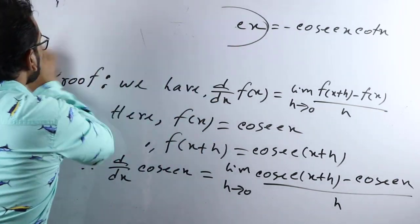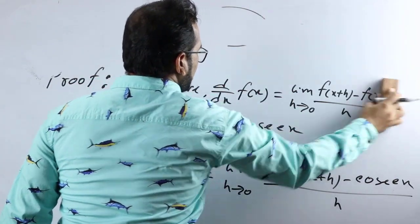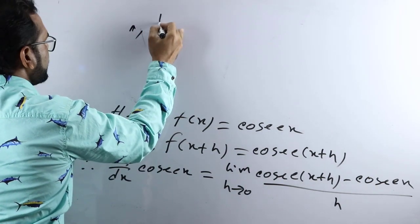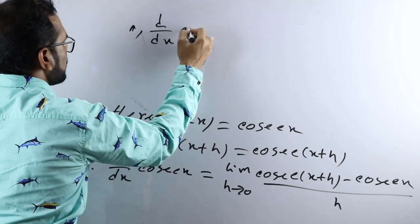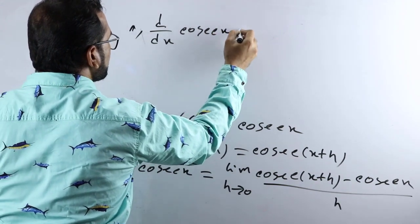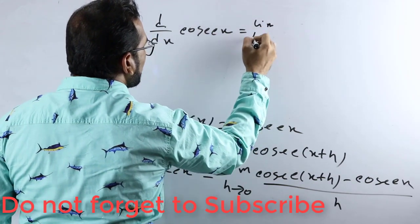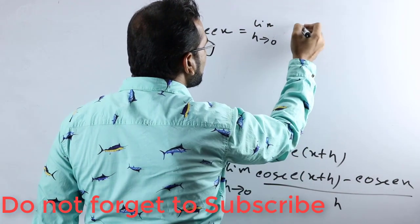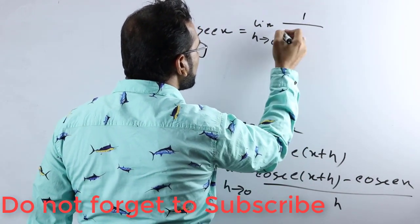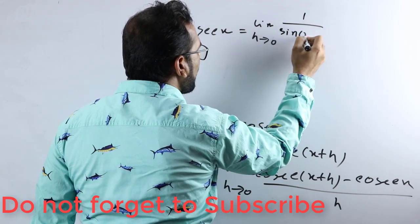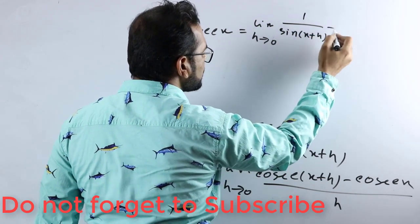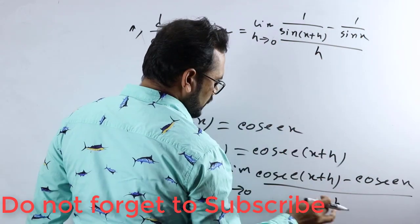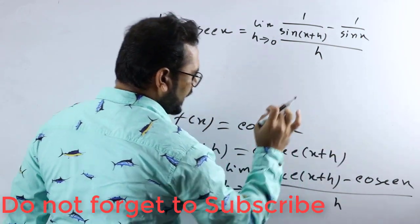Now the next line: d/dx of cosec x equals limit h tends to 0, one divided by h. Since cosec means 1 by sin, I am writing: 1 divided by sin(x+h), minus 1 divided by sin x, all divided by h.